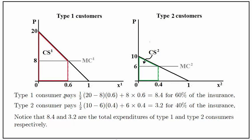Type 1 consumer pays one half of this value — the area of this triangle — so one half of the rise times run, plus the area of this rectangle, which is 8 times 0.6. So we get 8.4 for 60% of the insurance coverage.